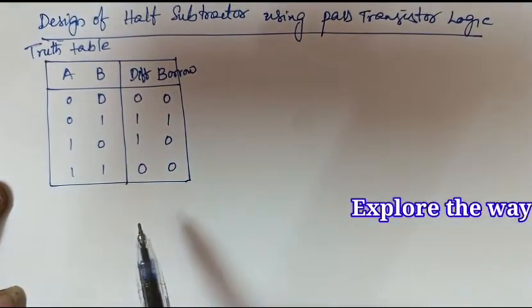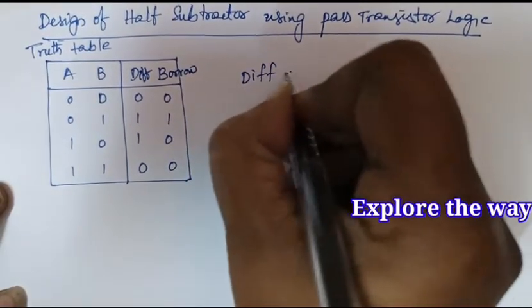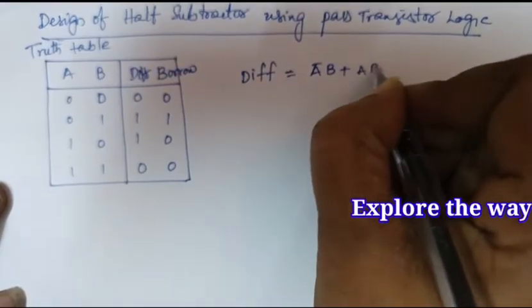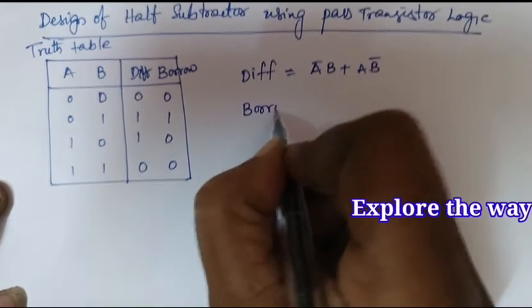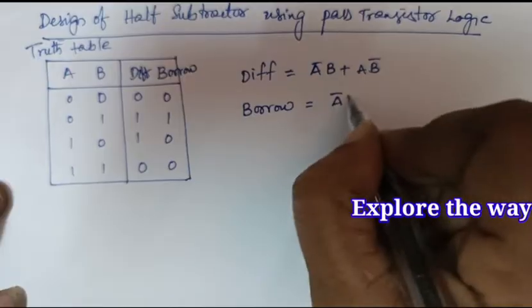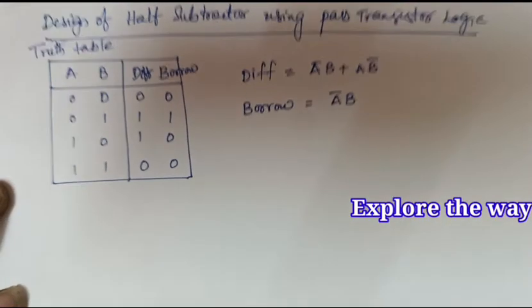This is the truth table for half subtractor. And from this the boolean expression for difference is equal to A bar B plus A B bar. Similarly for borrow which is equal to A bar B. These are the boolean expressions for half subtractor.